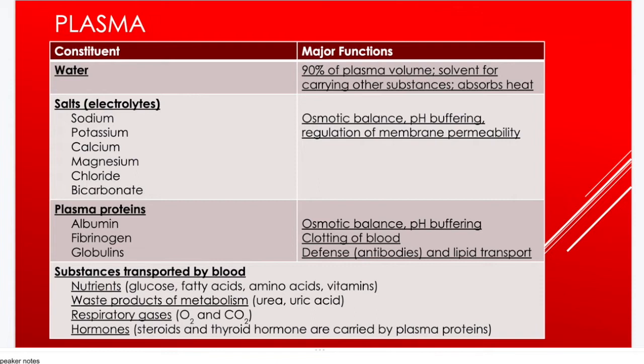Globulins function in defense as antibodies and also transport lipids. Other substances transported by plasma include nutrients such as glucose, fatty acids, amino acids, and vitamins; waste products of metabolism — specifically urea and uric acid — filtered by the kidneys; respiratory gases (oxygen and carbon dioxide); and steroid and thyroid hormones carried by plasma proteins.